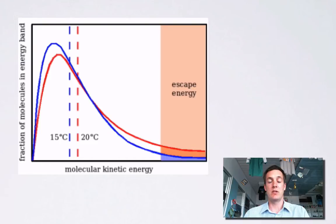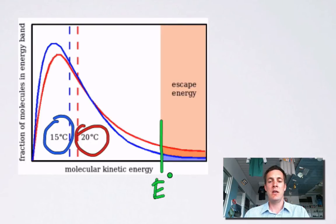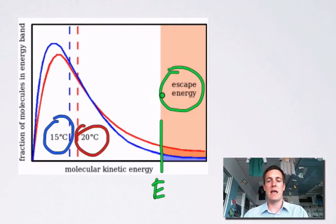Let's look at this energy distribution curve and the two lines on it. We've got a blue line at 15 degrees centigrade and a red line at 20, and what this graph is showing is that the average energy at 20 is higher than the average energy at 15. But we can also see that at both these temperatures, even though they're quite low, there are particles that have greater than this energy. They have enough energy to escape from the liquid and evaporate — they can overcome the forces of attraction and turn into a gas. There are more of them at the higher temperature than at the lower one, but regardless, there are some particles that can do that.